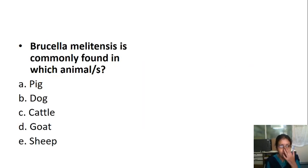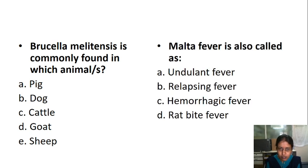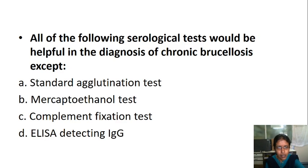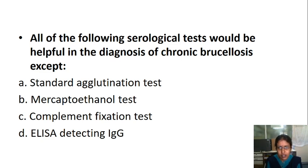Quick review: Brucella melitensis is commonly found in sheep and goats. Malta fever is also called undulant fever because the fever rises and falls in a typical undulating pattern. Regarding serological tests for chronic brucellosis, the standard agglutination test does not detect chronic infections because IgM is mostly associated with active infection, so it does not detect chronic brucellosis.